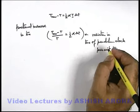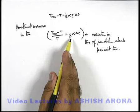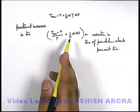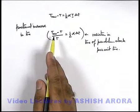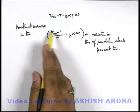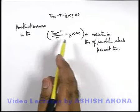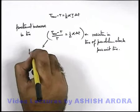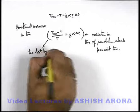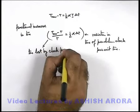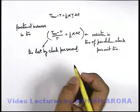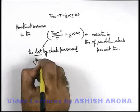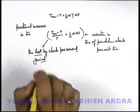This is the time lost or time gained by the clock per unit time, depending on whether the temperature is increasing or decreasing. If temperature is increased, the pendulum length increases, the new period will be more, so overall time will increase — the clock will slow down. We call this time lost by clock per second. Similarly, if temperature is decreased, this becomes time gained by the clock per second.